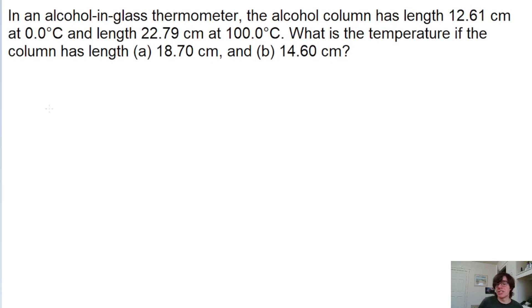So what we want to do is assume that the temperature and the length have a linear relationship. So we'll set up a slope relationship here: the change in temperature divided by the change in the length of the column.